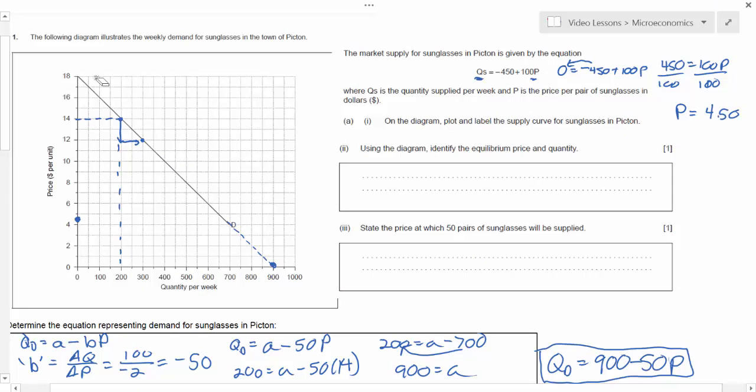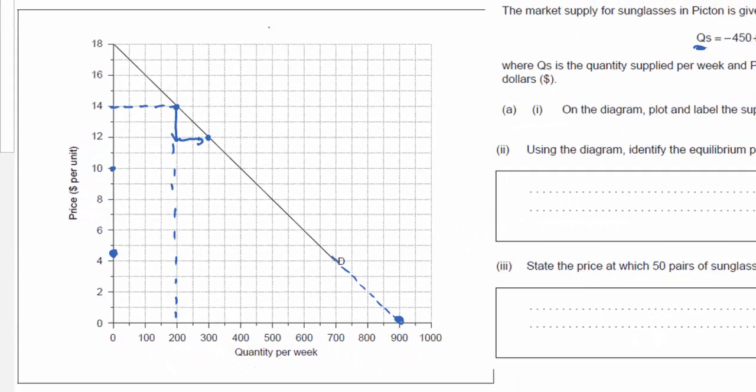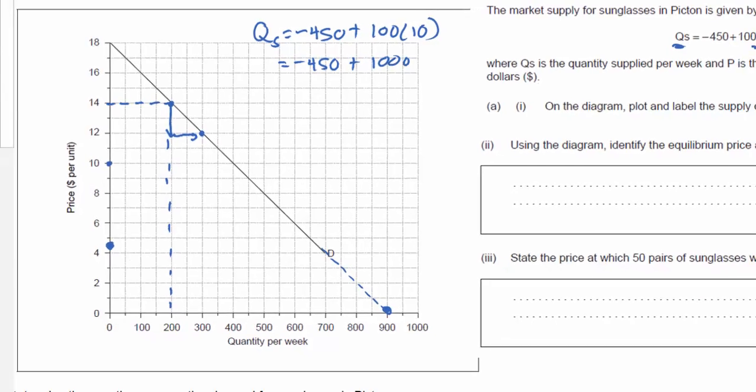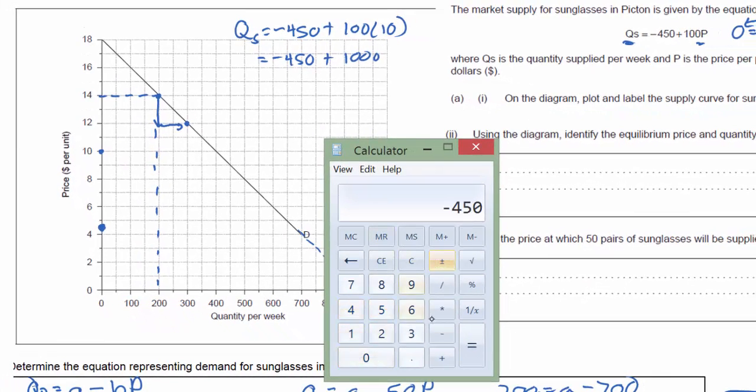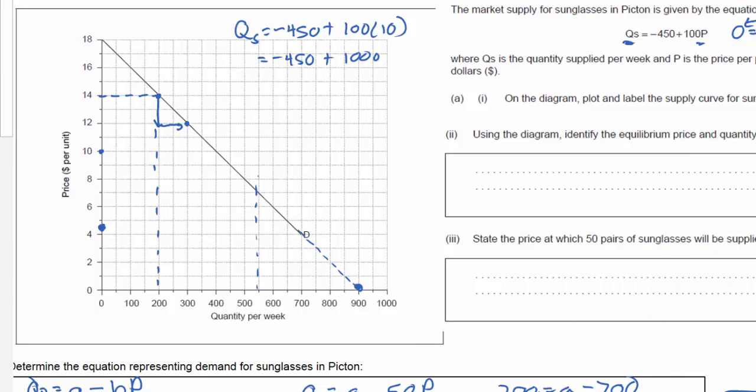All we need to do to find our actual supply curve is to plug in a price from somewhere else on our graph and determine the quantity that would be supplied at that price. So why don't we just do $10 here. I'll find out how much would be supplied at a price of $10, a nice easy number. To do that we just plug in 10 to our equation. Qs equals negative 450 plus 100 times 10. Qs equals negative 450 plus 1000, which gives us 550. So I can plot a point at a price of $10 and 550 sunglasses. It gives me a point right here on my supply curve.